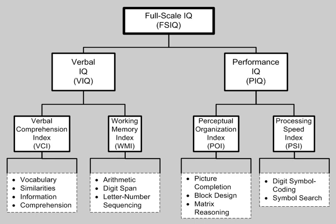There are four index scores representing major components of intelligence: the Verbal Comprehension Index (VCI), Perceptual Reasoning Index (PRI), Working Memory Index (WMI), and Processing Speed Index (PSI). Two broad scores, which can be used to summarize general intellectual abilities, can also be derived: the Full-Scale IQ (FSIQ), based on the total combined performance of the VCI, PRI, WMI, and PSI; and the General Ability Index (GAI), based only on the six subtests that the VCI and PRI comprise.